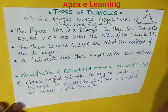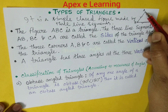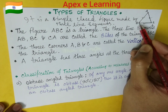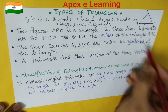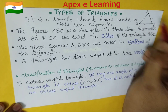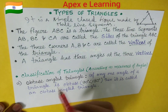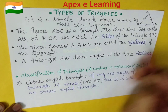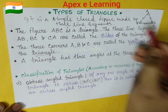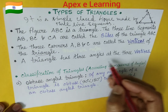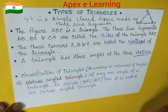The three corners of this figure are called vertices. Corner A, corner B, and corner C are called vertices of triangle ABC. And it is always true that a triangle has three angles at the three vertices.